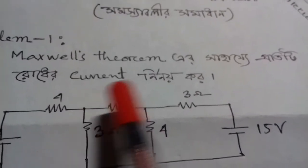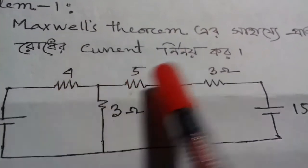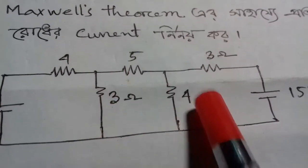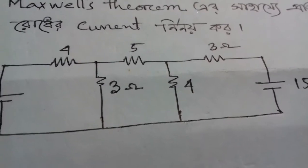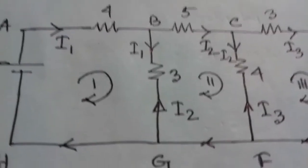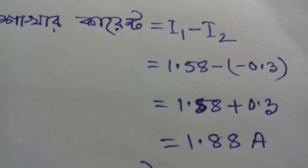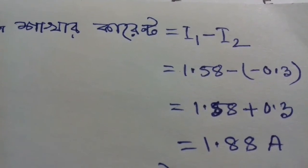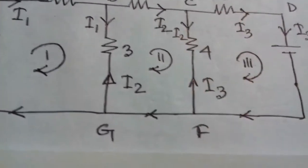So we found the loop currents i1, i2, and i3. Now the question is: once we have the loop currents, how do we find the branch currents? Branch CF carries current i2 minus i3. This is the first step and the second step.